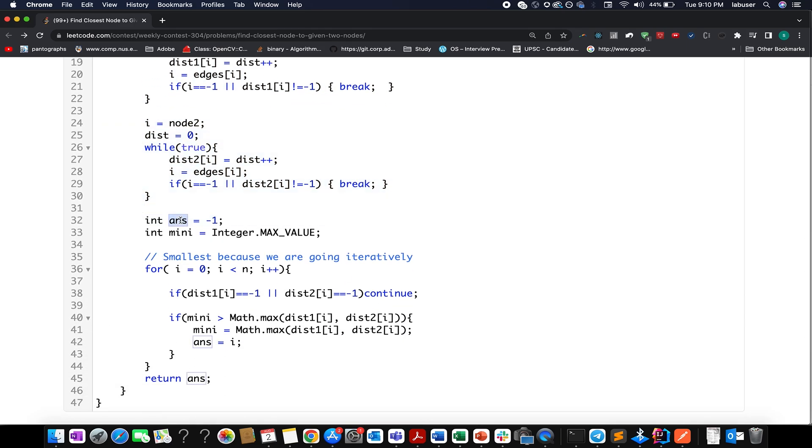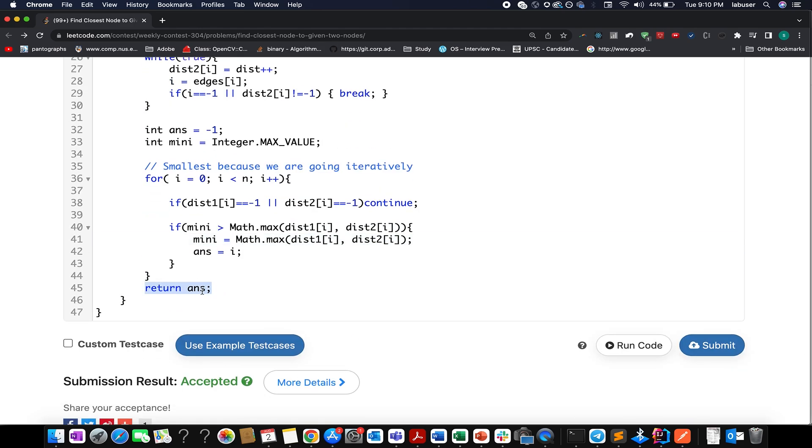And finally, I have here created an answer variable and initialized the minimum value to Integer.MAX_VALUE. And this answer variable will actually store the final index. So we start iterating from the zeroth index going up till n. And with each iteration, we'll be incrementing the pointer. If distance one from the ith index is equal to minus one or distance two from the ith index happens to be minus one, that means these nodes are not reachable either from node one or node two. We abort it. Otherwise, we compare the minimum value with the maximum of distance one at i comma distance two at i. And in case this condition is met, we reset our answer variable to ith index and we update the minimum to the maximum of these two. In the end, we simply return the answer variable that stores the final index.